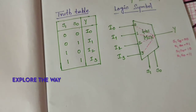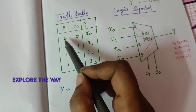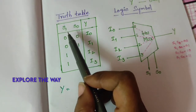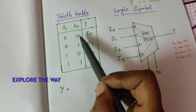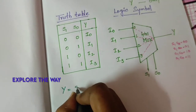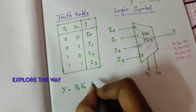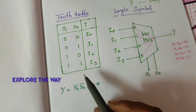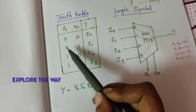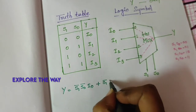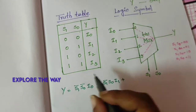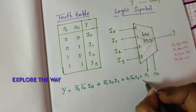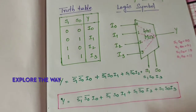From this truth table, let us write the Boolean expression. Here, 0 is expressed as the complemented form of the variable and 1 is expressed as the true form. So the expression is: Y = S1̄·S0̄·I0 + S1̄·S0·I1 + S1·S0̄·I2 + S1·S0·I3. This is the expression we need to implement.